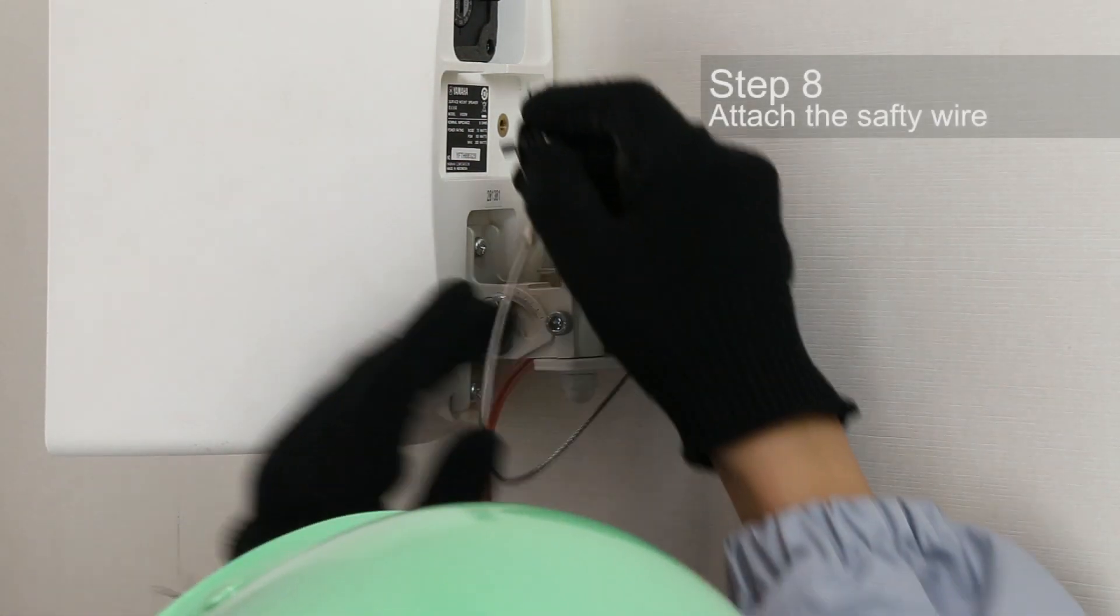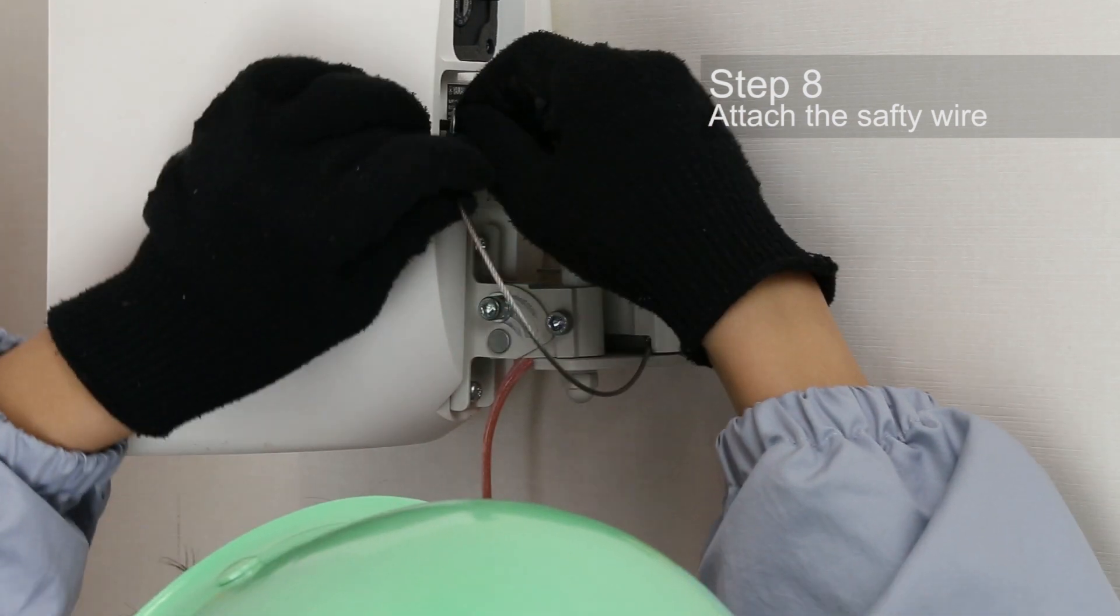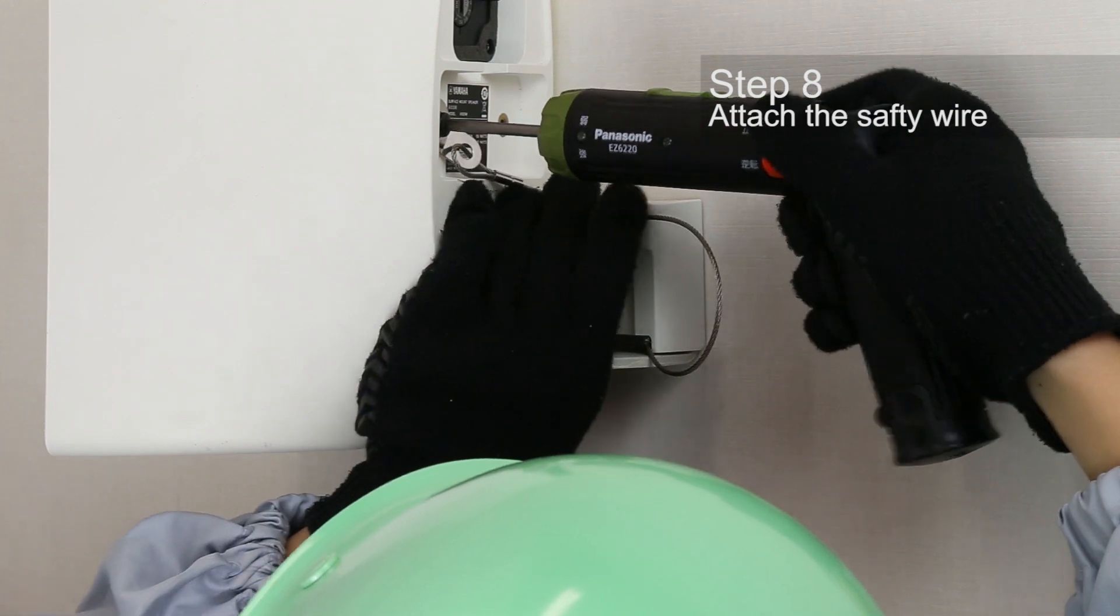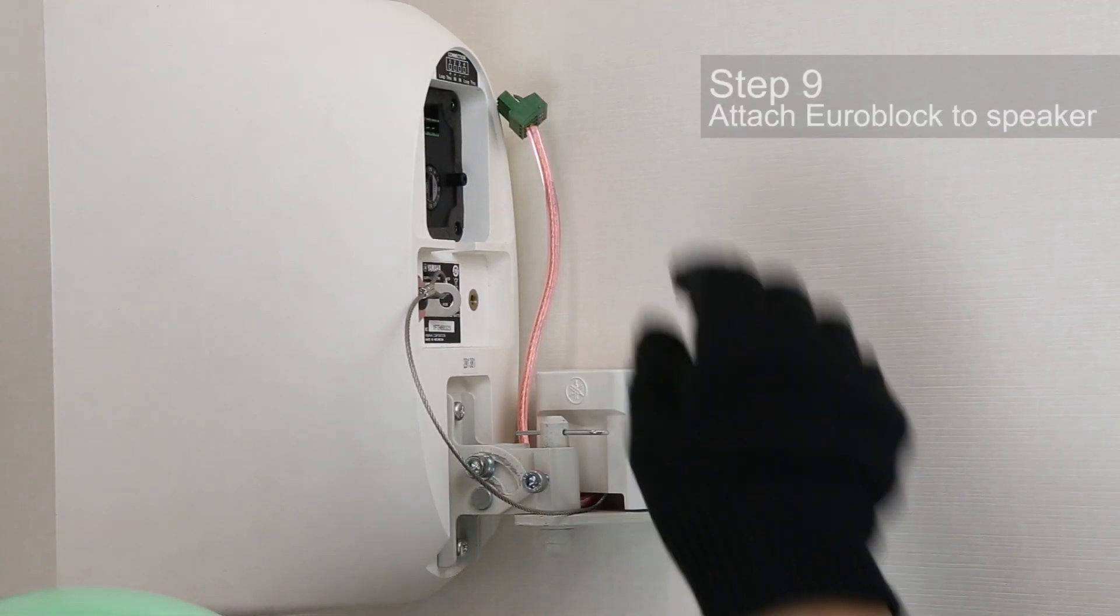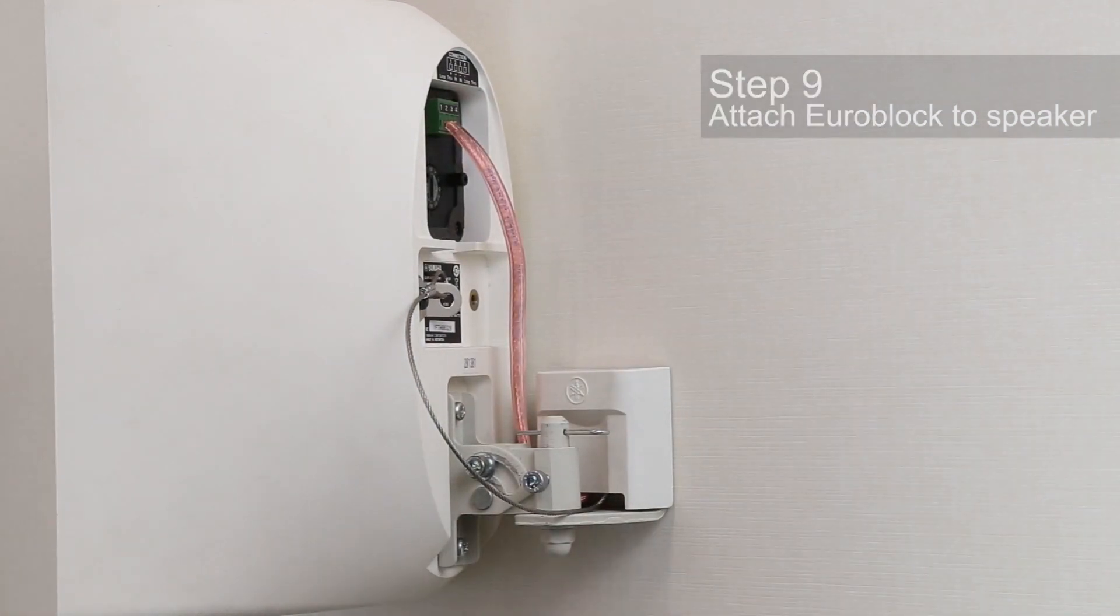Then, attach the safety wire to the VXS5 speaker unit. Next, plug the Euroblock connector into the socket in the speaker and attach the terminal cover.